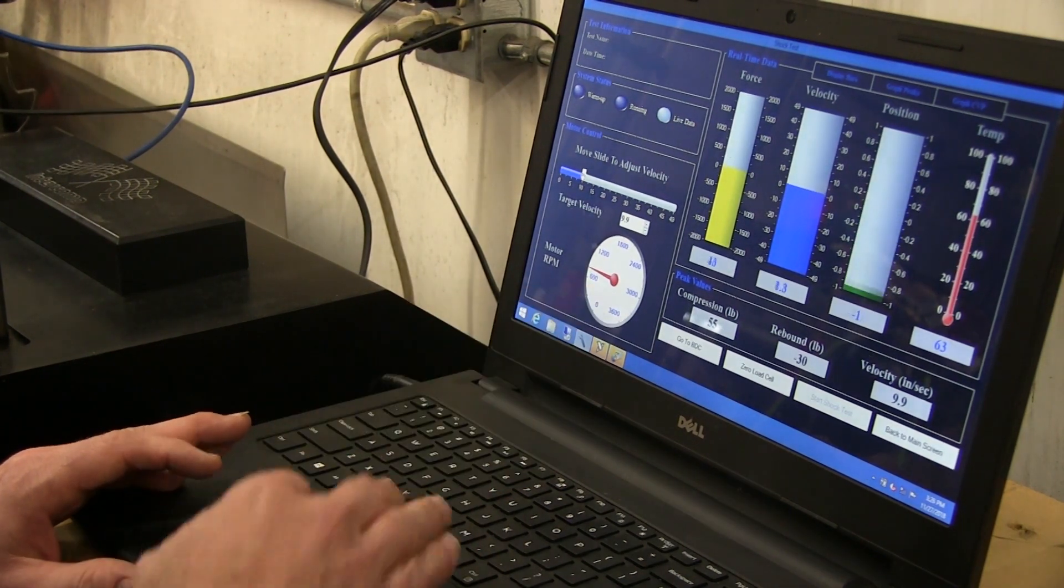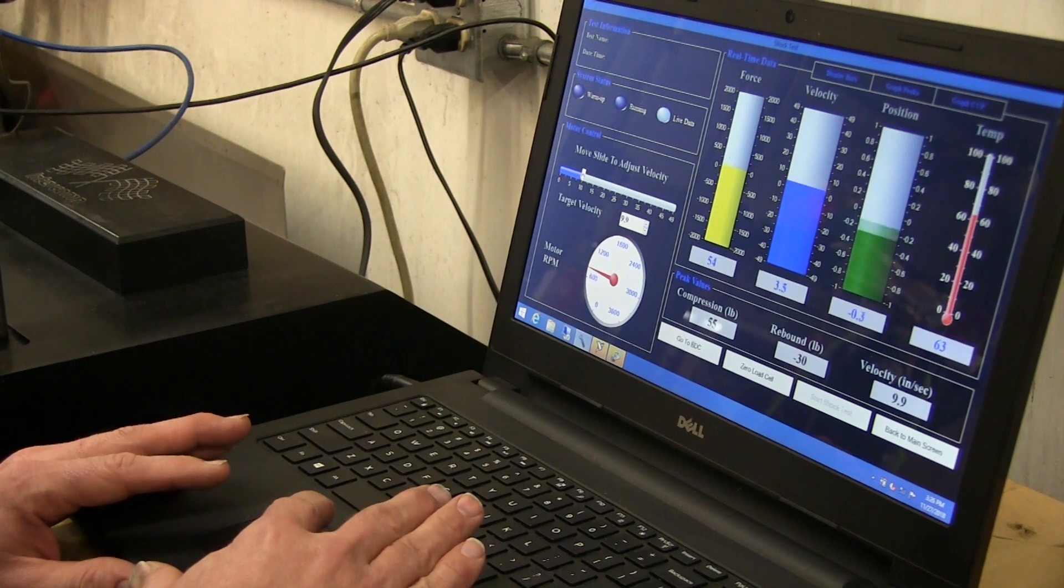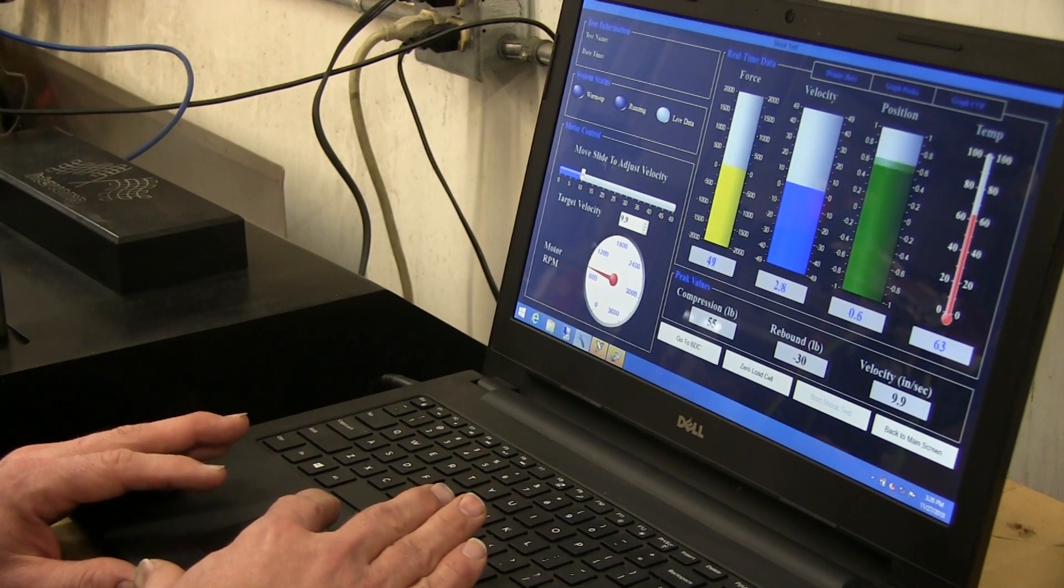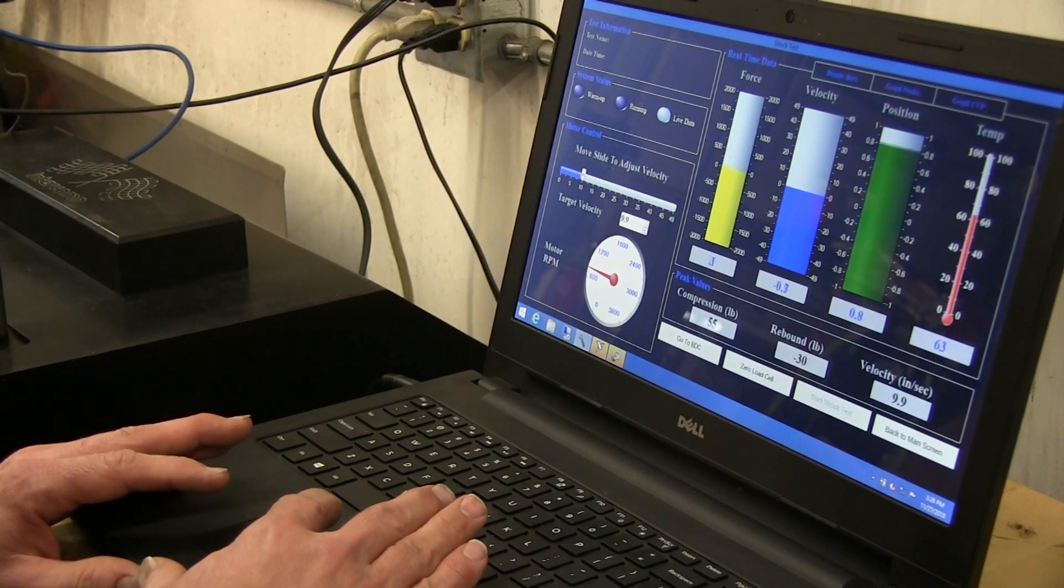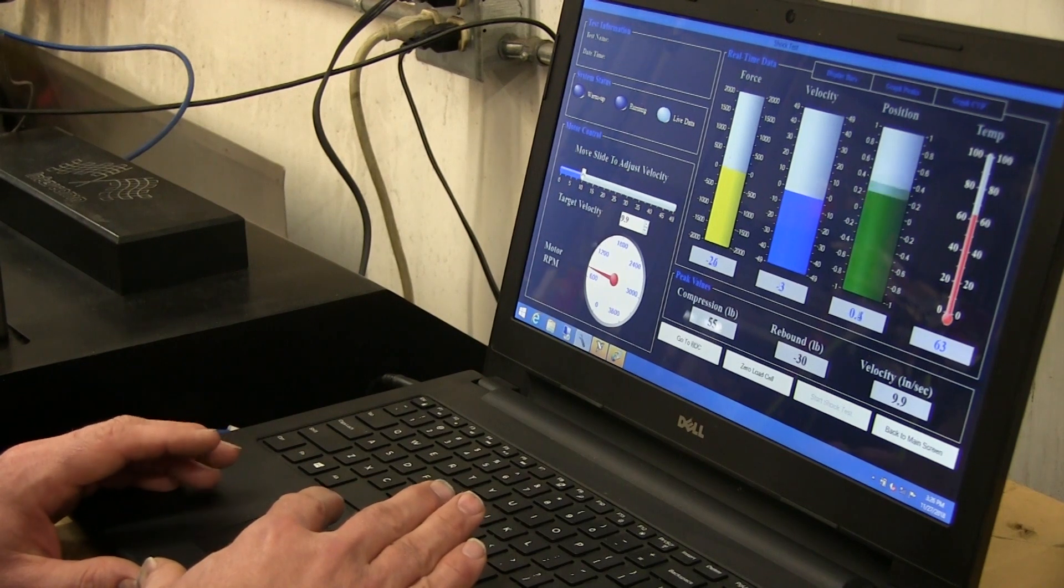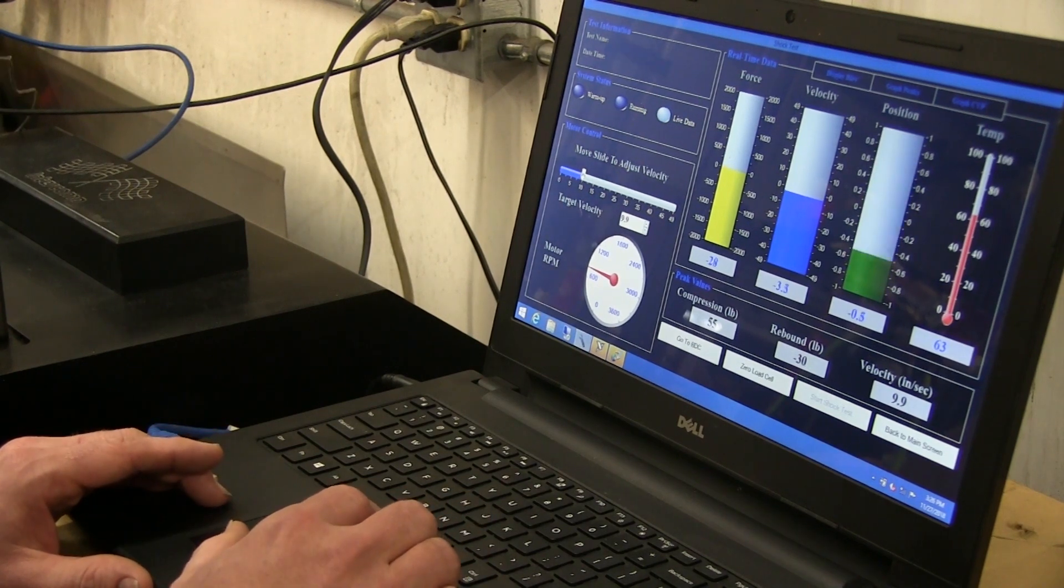Just give me some force numbers, some peak force numbers. Compression you're seeing 55, rebound you're seeing 30. This just gives me a real quick glimpse of what the shock looks like right after I have built it.